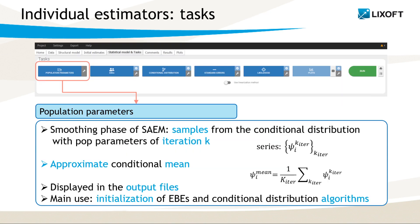Algorithms used in these two tasks are initialized with the approximation of the individual parameters, which are calculated at no additional computational cost from samples of the conditional distribution during the population parameter task. This gives the approximated conditional mean, because the samples come from the conditional distribution during iterations of the smoothing phase of the SAEM algorithm, when the final population parameters are not yet available.